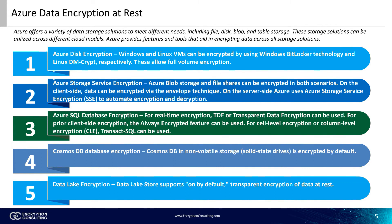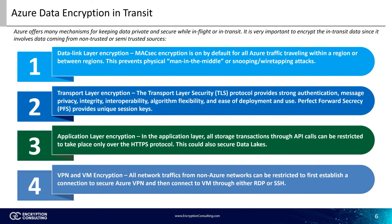Now, let's move on to data encryption in transit. Azure offers many mechanisms for keeping data private and secure while in transit. Since it involves data coming from non-trusted or semi-trusted sources, it is very important to encrypt these as they are highly vulnerable. In the data link layer, MAC SEC encryption is on by default for all Azure traffic traveling within a region or between regions.